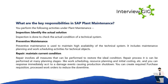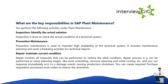Repair — involves all measures that can be performed to restore the ideal condition of a technical system. The repair process can be performed at many planning stages like work scheduling, resource planning, and initial costing. You can respond immediately to damage events causing production shutdown, create required purchase requisitions, and process work orders to reduce downtime.